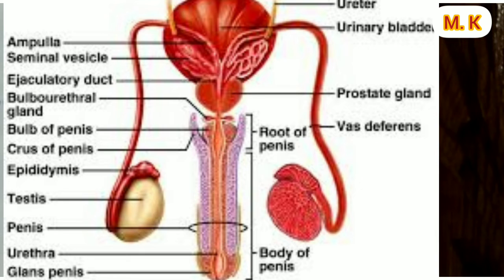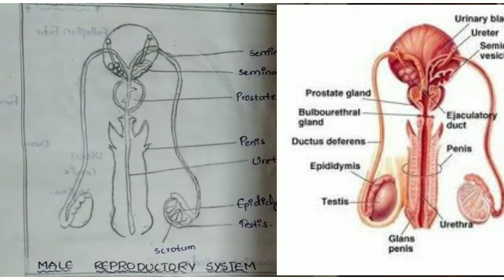The function of Vas deferens: from each epididymis arises the Vas deferens, which ascends into the abdominal cavity, looping around the urethra. The function of seminal vesicles: they open into the Vas deferens and produce seminal fluid, which is a source of energy for sperms when they are outside the body.